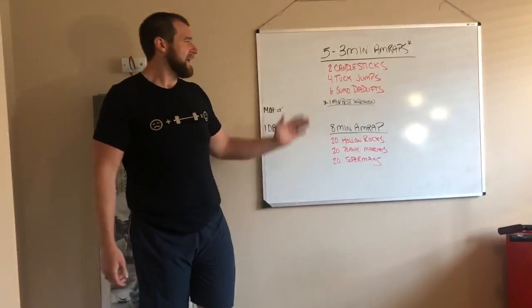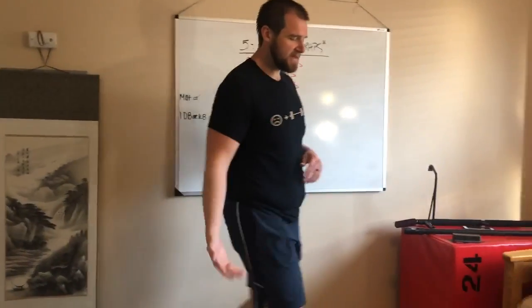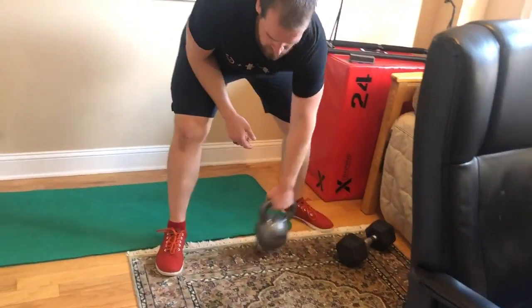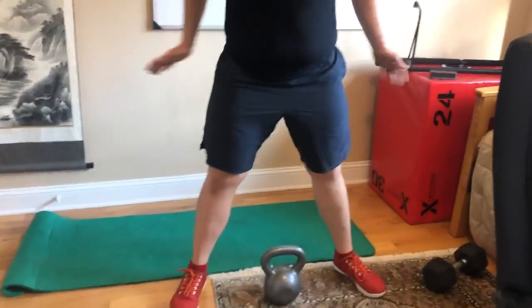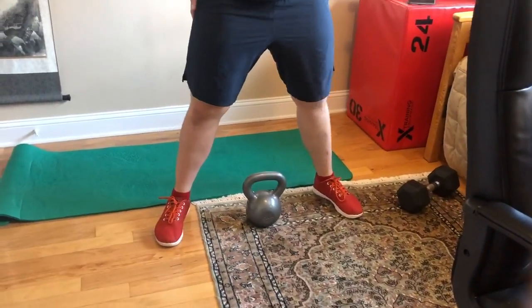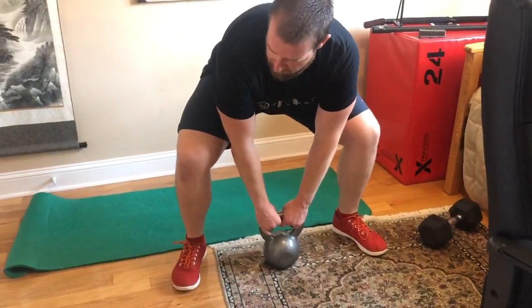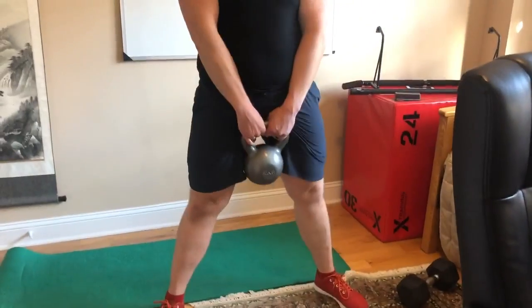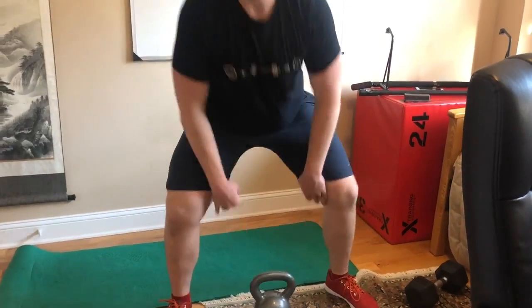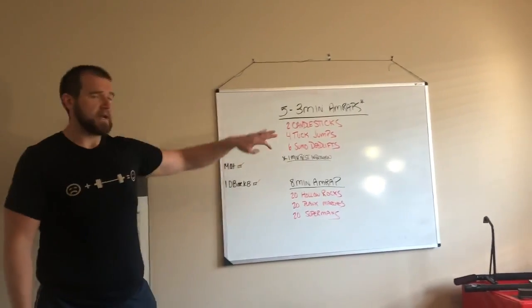Six sumo deadlifts. The sumo deadlift using either two dumbbells, a kettlebell, or one dumbbell, we want to go a little bit further than shoulder width apart with these. The difference between these and a regular deadlift is we're actually engaging our quads a little bit, so it's more of a squat motion than a hinge motion. We're going to bend over, notice how I have my legs bent, and then we're just going to stand up and then straight back down just like so for all six.